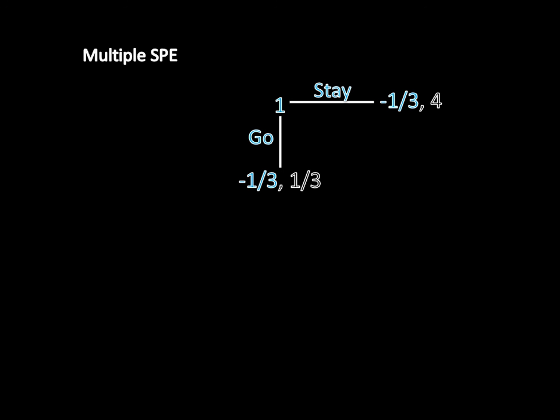That wraps up this video on multiple subgame perfect equilibria, and that is the lightning-quick crash course on how to find subgame perfect equilibria. In the next video, we'll start using subgame perfect equilibria for actual applications — specifically, how to make threats credible. The study of subgame perfect equilibria is really the study of credible threats, and we'll start by looking at how one can tie one's hands by burning a bridge to achieve a better payoff. Take care.